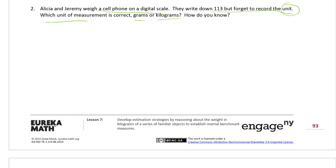Which unit would be correct, grams or kilograms, and how do you know? Well, kilograms is about two pounds, right? So 113 kilograms would probably weigh more than your teacher. So it has to be 113 grams, and that's how you know.